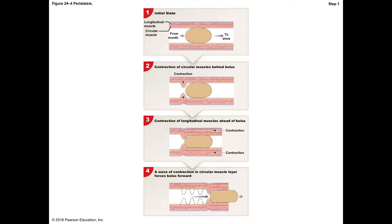Peristalsis is a term you need to know — it means contractions of smooth muscle that propel material from the mouth toward the anus. You ingest food, chew it up, swallow it, and it goes down the esophagus. The muscular tube squeezes behind that bolus and pushes it forward. In areas with more solid material, like the esophagus and colon, we get more peristaltic contractions. In areas where it's more liquid, like the small intestine, we need fewer.